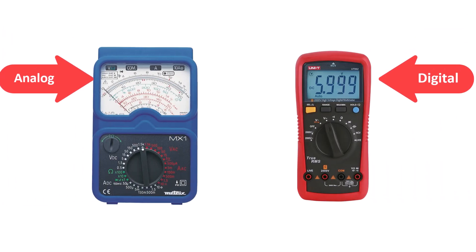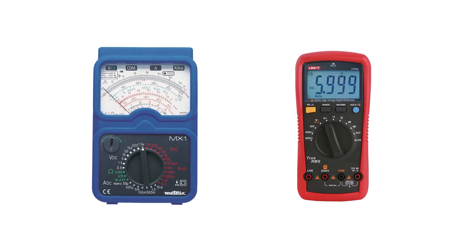There are two main types of multimeters: analog and digital. Analog multimeters use a needle to display readings, while digital multimeters show values on an LCD or LED screen. Additionally, multimeters can be categorized as auto-ranging or manual.